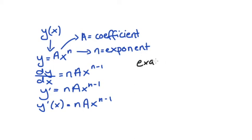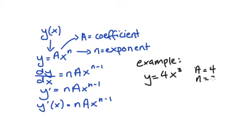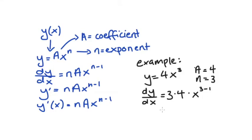Just to give an example: if we had the function y is equal to 4x to the power of 3, then translating our rule, a is equal to 4 and n is equal to 3. So the derivative dy/dx — we take n out the front, so that would be 3, which multiplies 4 since a equals 4, and then we have x and we take one off from the exponent. So it all reduces down to 3 times 4, which is 12 times x to the power of 3 minus 1, which is 2.